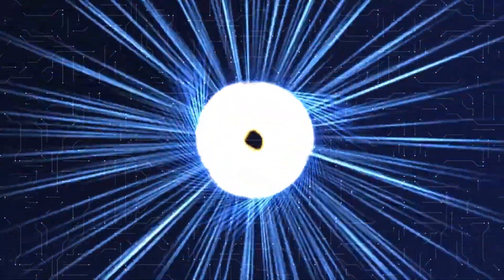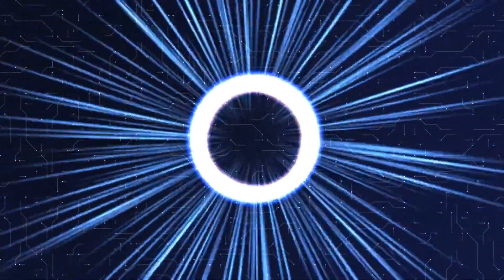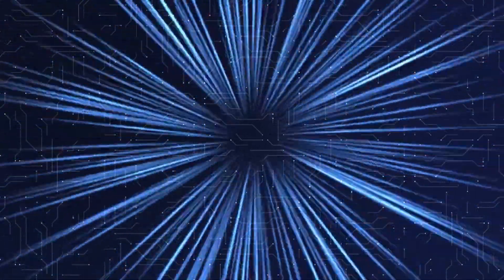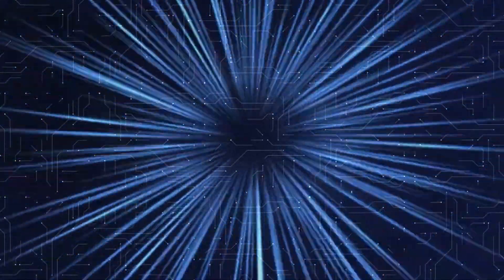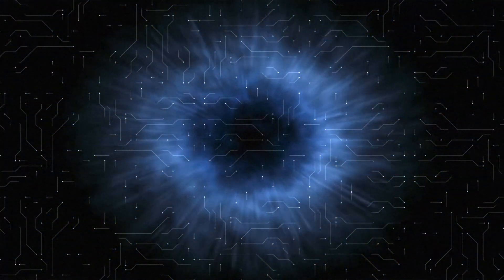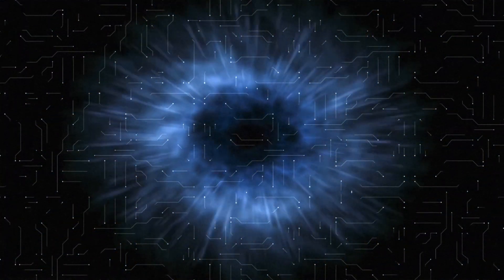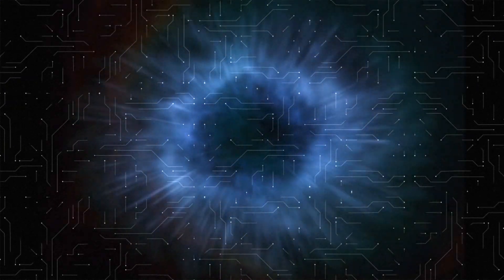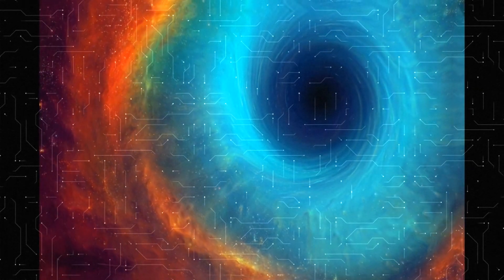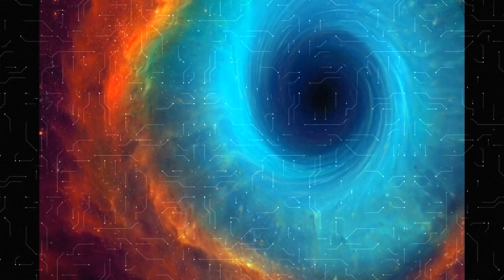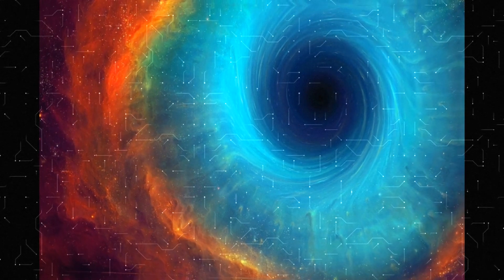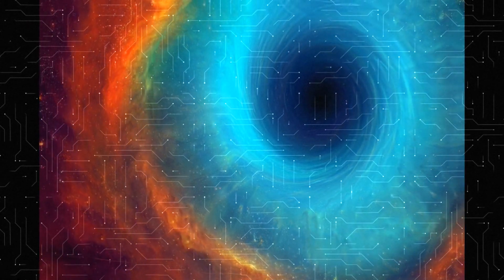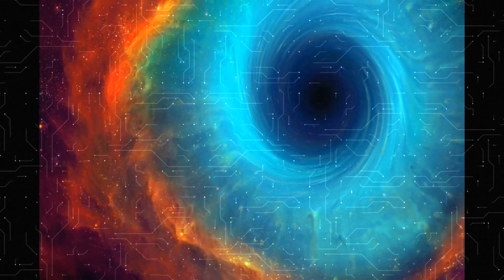Event horizon, similar to the non-rotating black hole, the rotating black hole also has an event horizon. It is the boundary beyond which nothing, including light, can escape the gravitational pull of the black hole. However, the event horizon of a rotating black hole is slightly different from a non-rotating black hole and is referred to as the static limit. Inside the static limit, space is dragged by the rotation of the black hole, affecting the movement of objects and light.